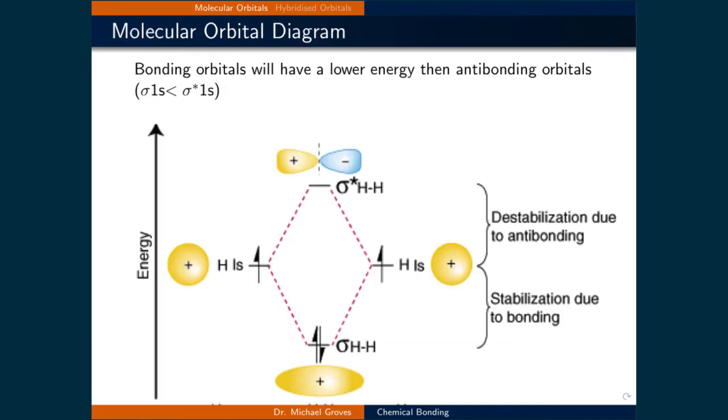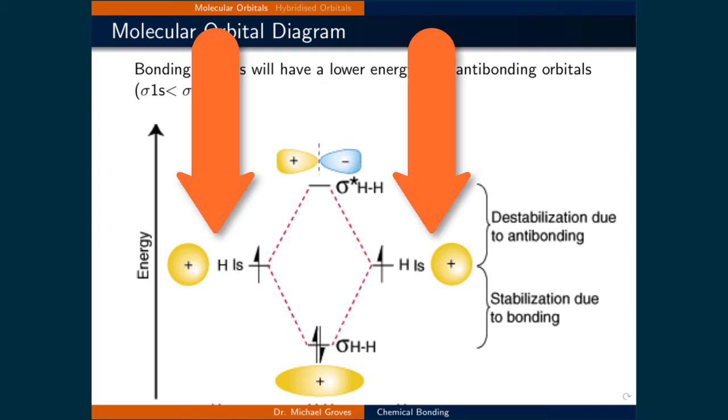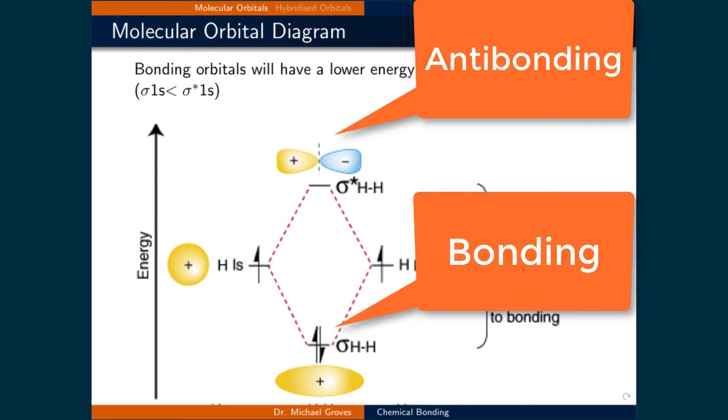Let's now look at the relative energies of bonding and antibonding orbitals in H2 in the ground state. Here we have two 1s orbitals on their own with an electron each. In the center are the bonding and antibonding molecular orbitals.